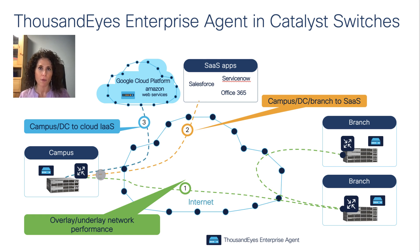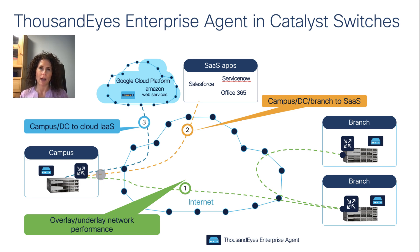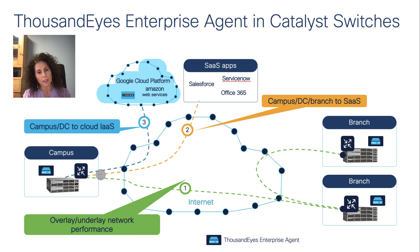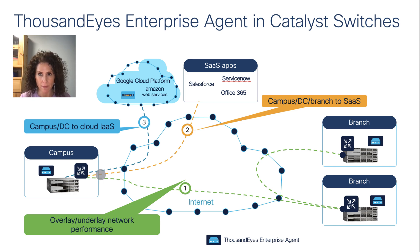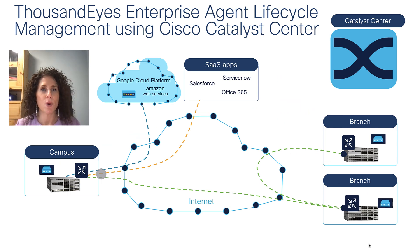With the ThousandEyes agent we can run tests — it's up to the network admin to decide which tests are relevant for the environment. The first example, shown in green, is running tests from the campus to the remote branch to examine network path and performance, including both overlay and underlay. Number two, highlighted in orange, is from campus to SaaS-hosted applications — for example Salesforce, Office 365, ServiceNow. And lastly, in blue, is the option to monitor from campus to cloud infrastructure as a service.